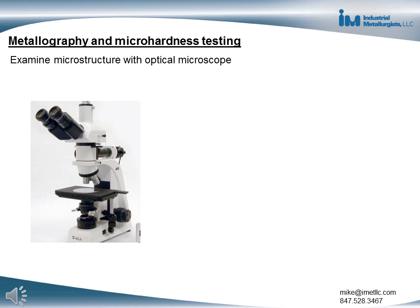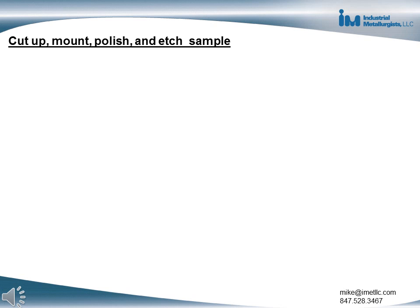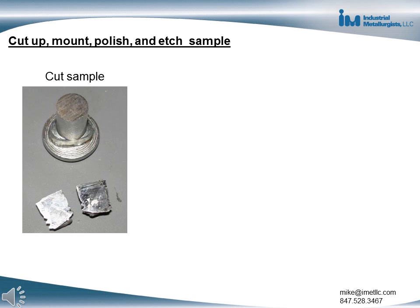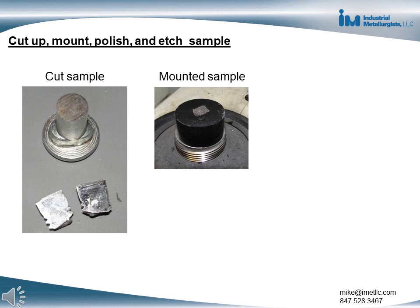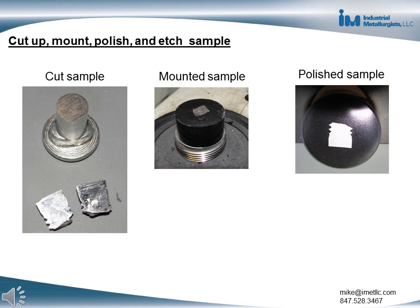Electroplated zinc is commonly used on steel screws for galvanic corrosion protection. The next step was metallography and micro hardness testing. Metallography involves examining the metal's microstructure with an optical microscope. Preparing the sample involved cutting it, mounting a portion in a plastic resin, polishing the mounted sample, and etching the sample to bring out certain microscopic features.